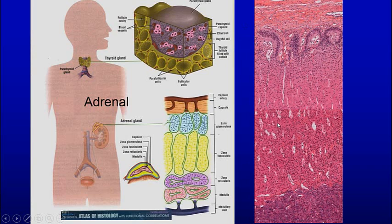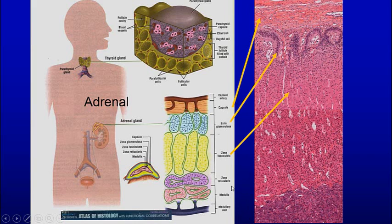When we look at the adrenal, we can see the different layers in the cortex and the medulla. The cortex is on the outside and the medulla is in the middle. There are different layers: you have the stratum glomerulosa — it looks kind of like a glomerulus — the stratum fasciculata, stratum reticularis, and then finally the medulla. The chromaffin cells of the medulla have a distinctive type of staining.